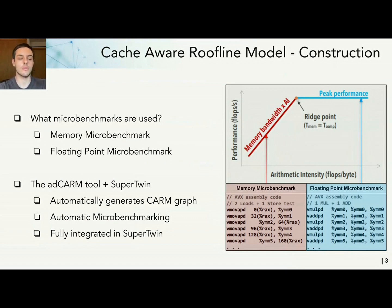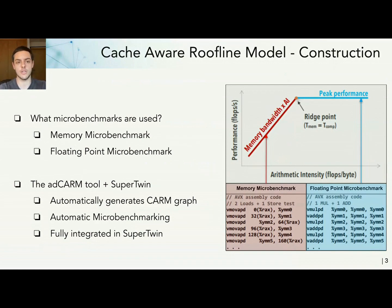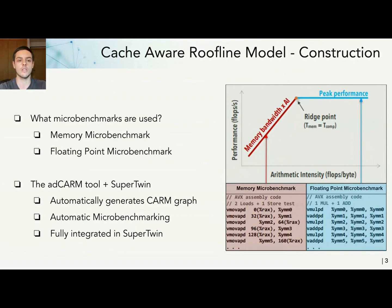To make this process easier and more automatic, we have the Ad CARM tool, which is integrated into SuperTwin. This tool is responsible for automatically generating a CARM graph for your system by doing automatic microbenchmarking. Being fully integrated in SuperTwin, it takes advantage of the SuperTwin description to get all the data it needs about your system to build the microbenchmarks and the graph.